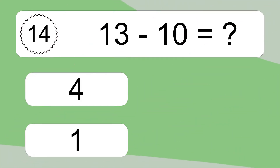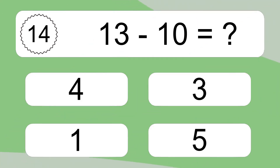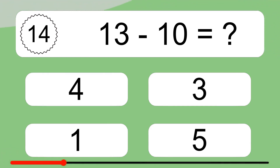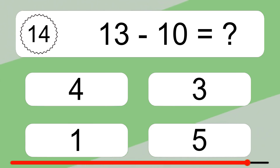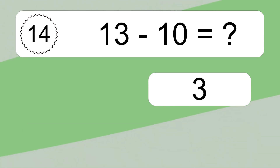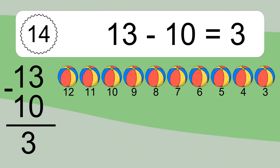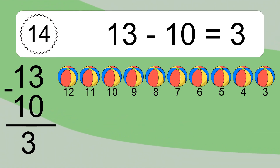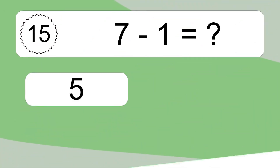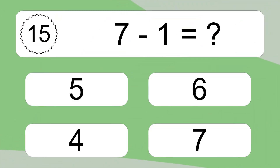13 minus 10 equals what? 13 minus 10 equals 3. Let's count it: 12, 11, 10, 9, 8, 7, 6, 5, 4, 3.